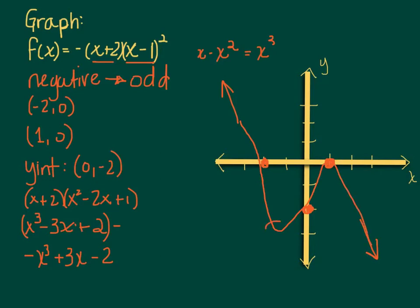After foiling that out, I find out that my y-intercept is negative 2. So I know this is going to come down here somewhere, come back up through negative 2 and then hit my double root and go down. The question is, where is that?